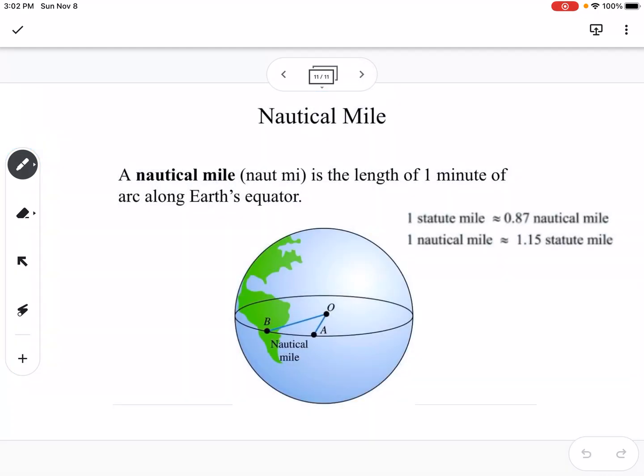And the last thing is nautical miles. So nautical miles are different than statute miles or what normal miles we think of. A nautical mile is the length of one minute of arc along the Earth's equator. So one statute mile is about 0.87 nautical miles, or we can say one nautical mile is about 1.15 statute miles.